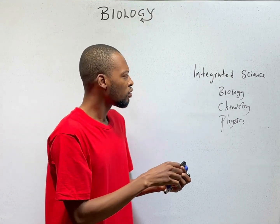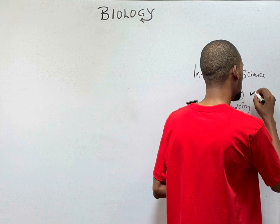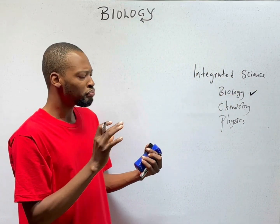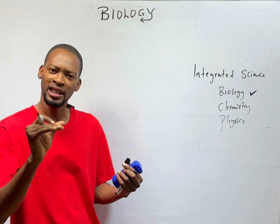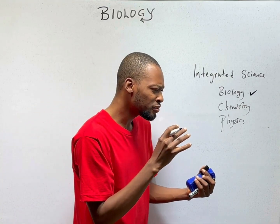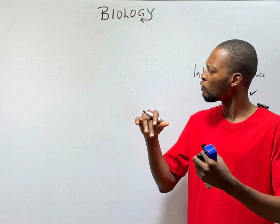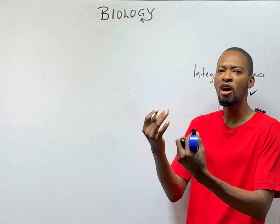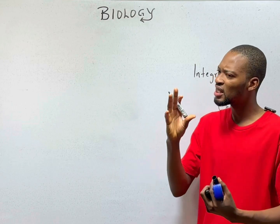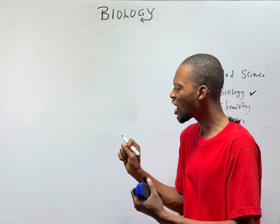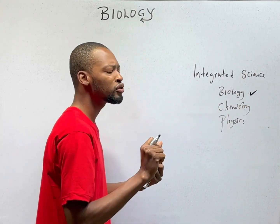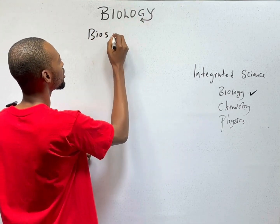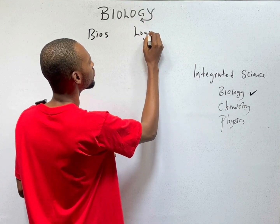Now, what is biology? Let's look at biology etymologically. Etymology means the meaning of words from how they are formed, from their origin. Etymologically, biology is from two Greek words: bios and logos.